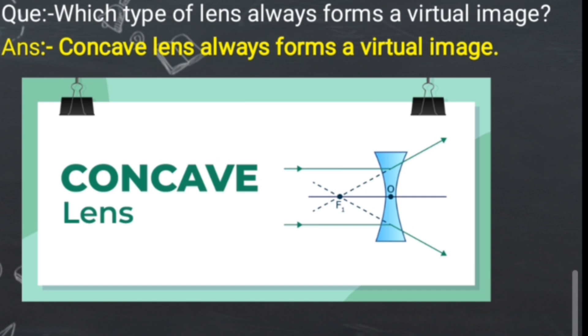Which type of lens always forms a virtual image? Which type of mirror always forms a virtual image? Lens ka toh pata chal gaya, concave lens hote hain. Agar mirror ke upar aapko yeh exact same question diya jaata hai, so what answer will you be able to type and tell you?